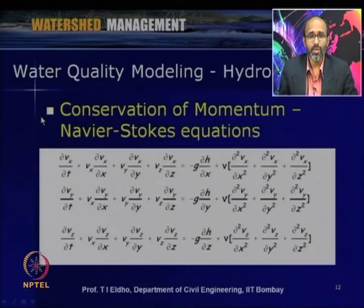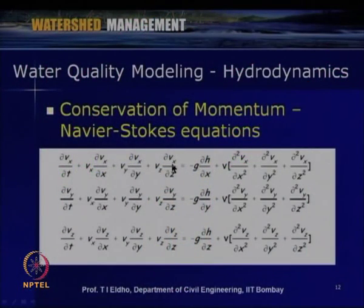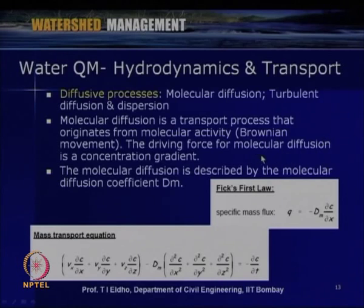From the continuity and momentum equations, we can obtain velocity variations and pressure or depth variations within the domain. The modeling can be three-, two-, or one-dimensional depending on the system being modeled. Solutions of the continuity and momentum equations give variations of velocities and depth or pressure within the flow domain.